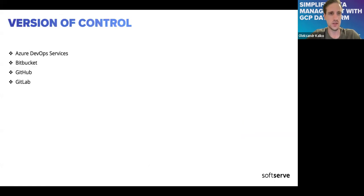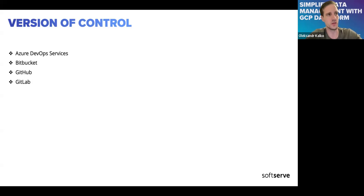Let's go to version control. By default, Dataform supports Azure DevOps, Bitbucket, GitHub, and GitLab. You can connect to an existing repository or create a new one. You need to create a definitions folder and a dataform.json and settings.yaml file. Dataform will pick up all this information, install the dependencies, and you will be able to work with the Dataform IDE directly from the GCP console.